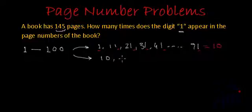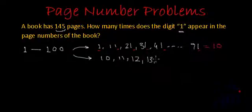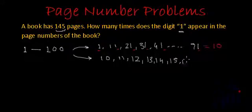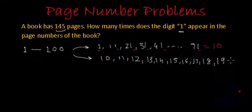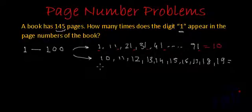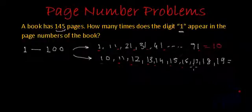Now if we count the 1s at the tens place, the first number will be 10, then 11, then 12, 13, 14, 15, 16, 17, 18, and 19. How many 1s are there in the tens places? We have 1 for each of those numbers — total 10 again.